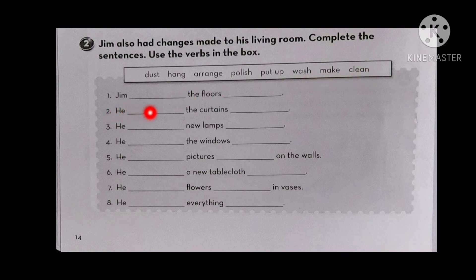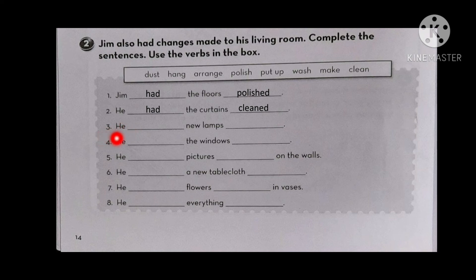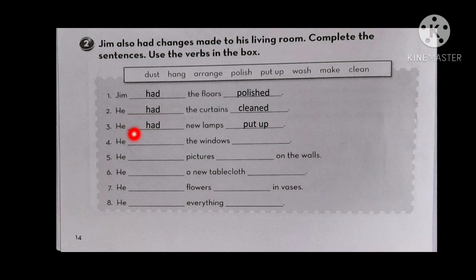Number one: James had the floors polished. Number two: he had the curtains cleaned. Number three: he had new lamps put up. Notice, students — the verbs here are in the third form (past participle), and they all go with 'had'. Number four: he had the windows washed. Number five: he had pictures hung on the walls.